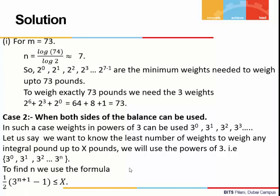Now let's come to the next case — when we can use both sides of the balance, or either pan. In such a case, powers of 3 come in handy. To find the least number of weights to weigh any integral pound up to x pounds, we use powers of 3 to the power 0, 3 to the power 1, up to 3 to the power n. To find n, we use the formula: (3 to the power n+1 minus 1) divided by 2 is less than or equal to x.